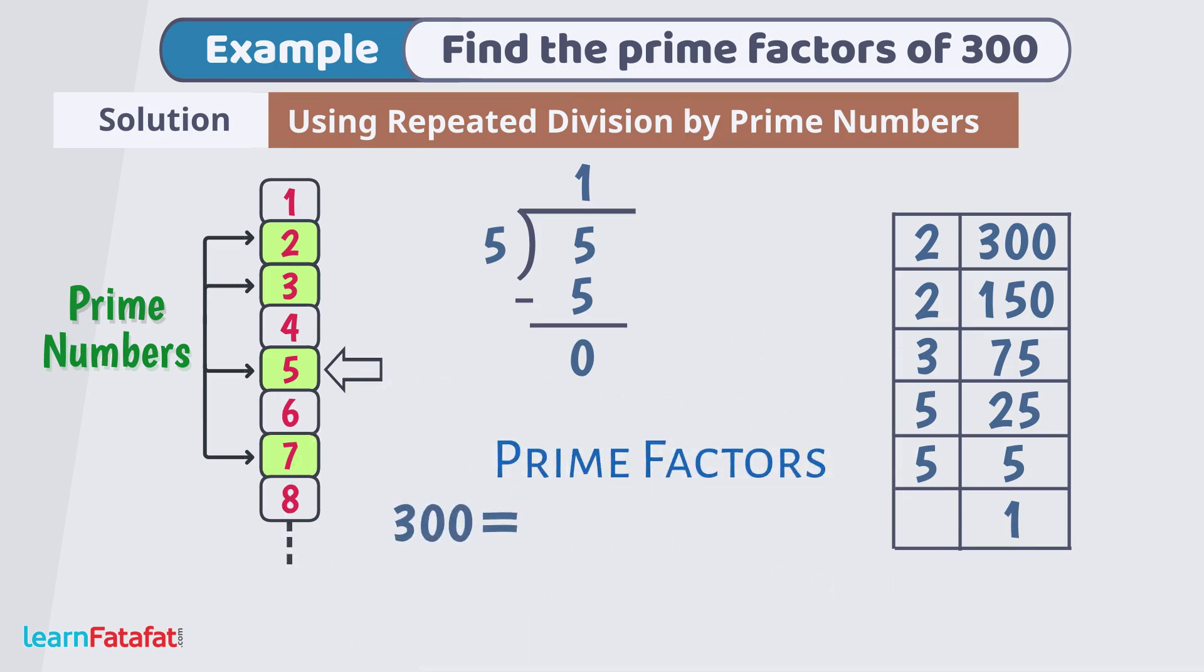So, prime factors of 300 are 2, 2, 3, 5, 5.